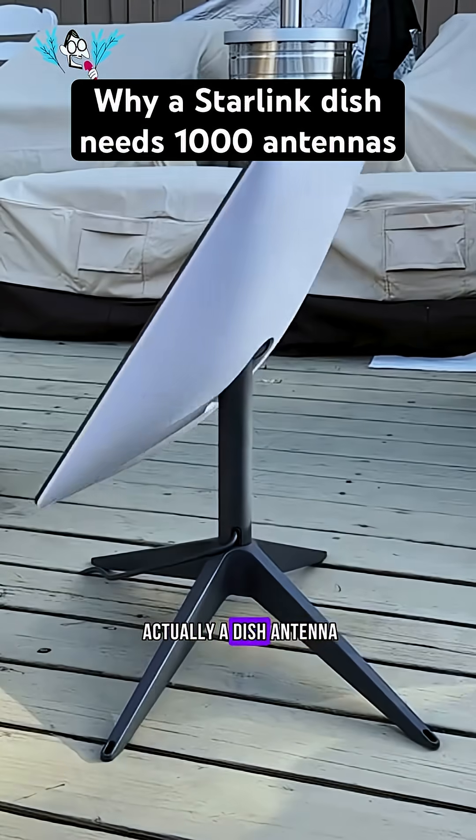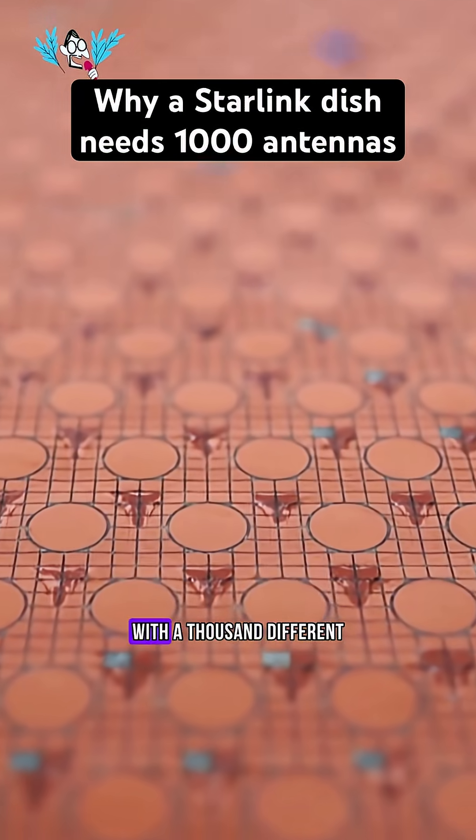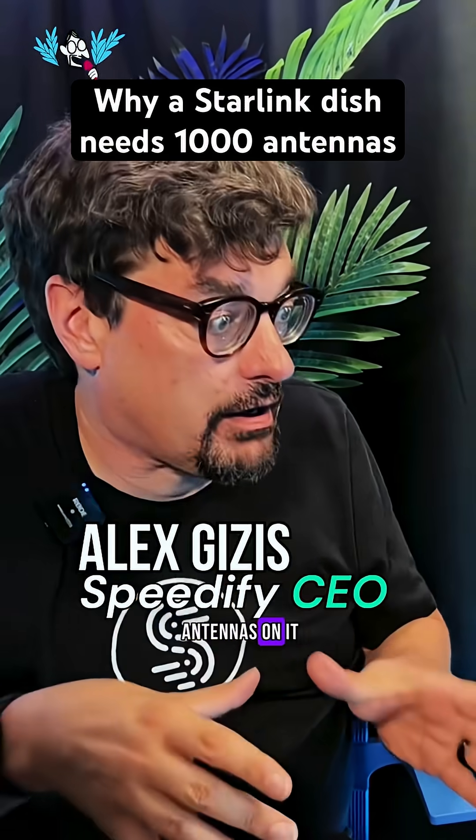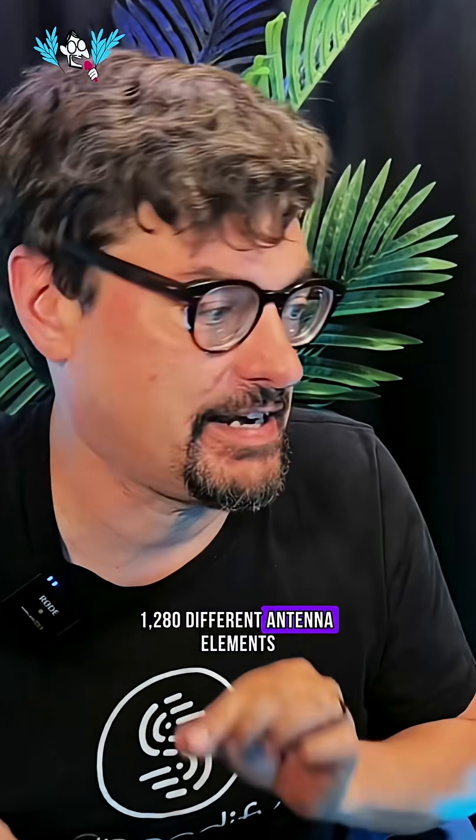A Starlink dish isn't actually a dish antenna, it's actually a flat panel with a thousand different antennas on it. 1,280 different antenna elements.